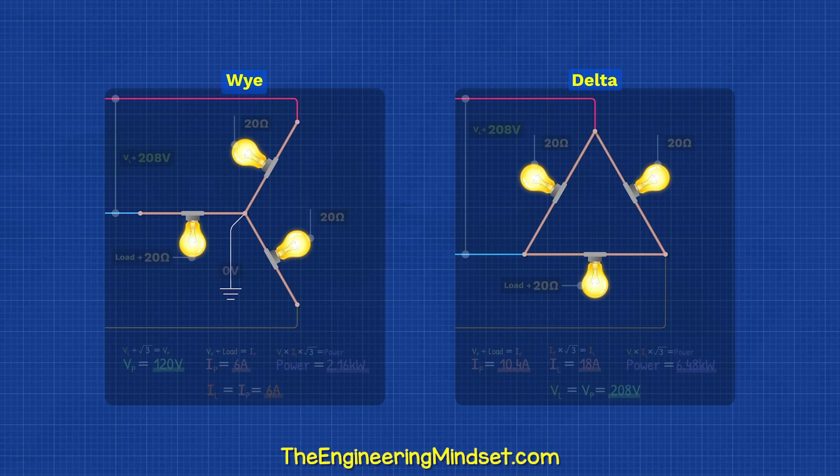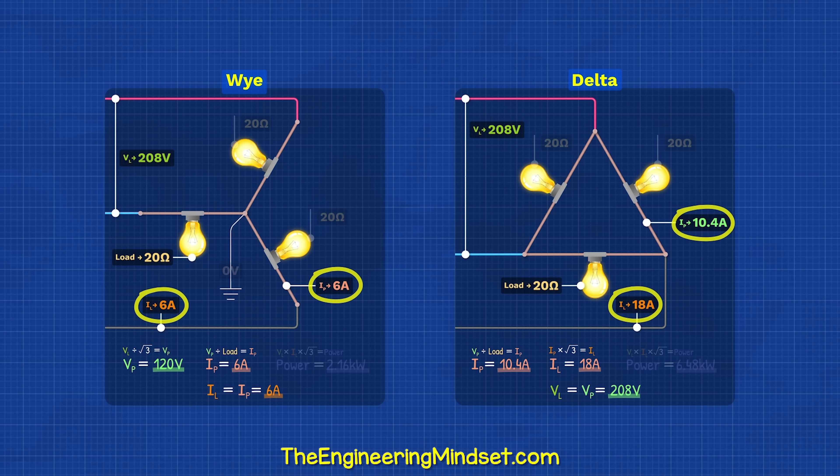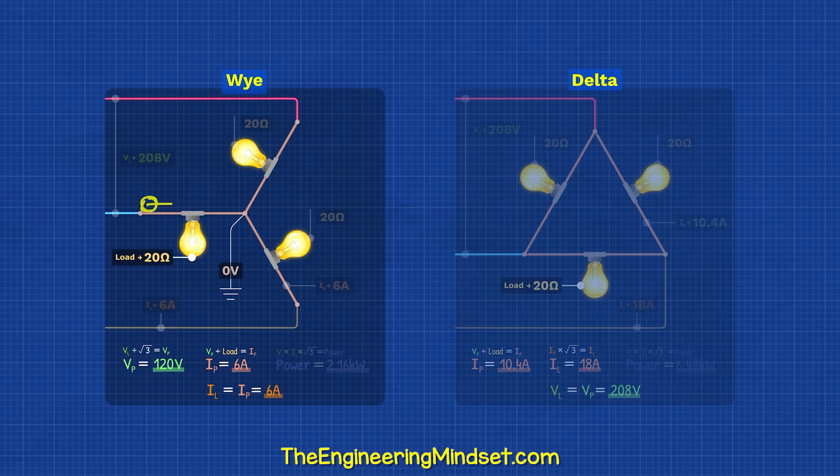We can either connect the three phases in Y or delta configuration. There are different reasons, but basically if the loads were the same resistance or impedance, and the phase to phase voltage was also the same, the current would be larger in a delta configuration because the loads connect across two phases. Whereas the Y connected loads connect to a zero point, so they experience different voltages.